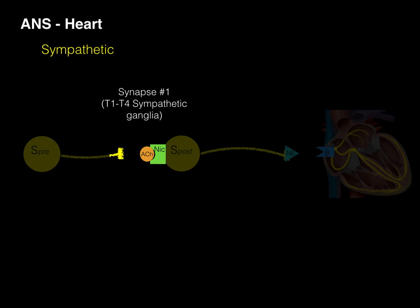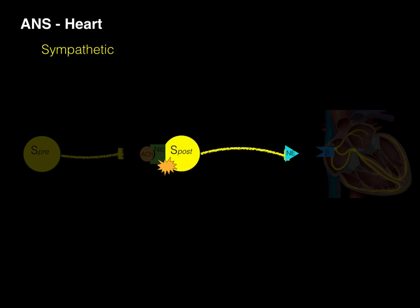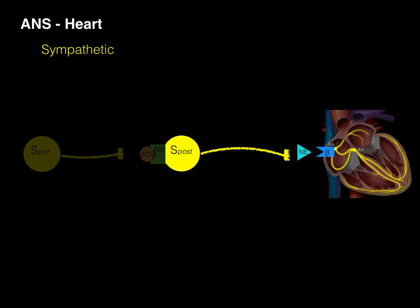Nicotinic is describing one type of a cholinergic receptor. Once this occurs, our post-ganglionic sympathetic neuron is then going to conduct an impulse down its axon, and then synapse.